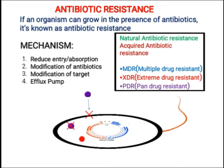Then we have modification of target۔ اگر بیکٹیریا اس specific antibiotic کو modify نہیں کر سکتا، اس کی breakdown نہیں کر سکتا، تو پھر وہ اپنی target site — جس پہ آکے اس antibiotic نے act کرنا ہے — اس کو اس طرح change کر لے گا کہ یہ antibiotic اس target site کے ساتھ attach نہیں ہو سکے گی، اور ultimately it will not kill the bacteria.